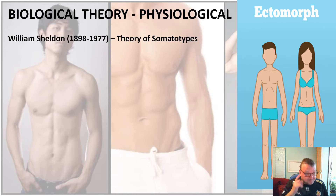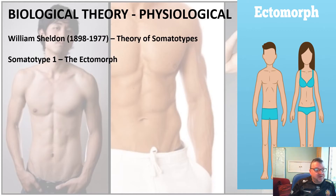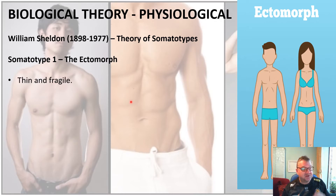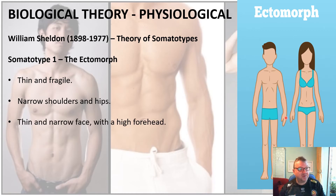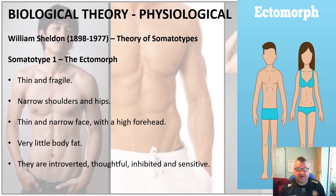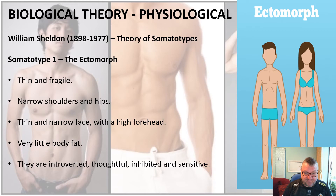The first somatotype is the ectomorph. Sheldon categorised an ectomorph body type as being thin and fragile, with narrow shoulders and hips, a thin and narrow face with a high forehead, and very little body fat. He believed that an ectomorph was introverted, thoughtful, inhibited and sensitive.